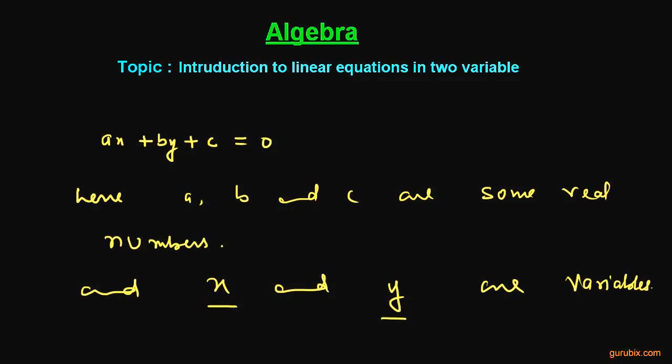And now you can look at the power of this x and power of this y. The power of both x and y is 1. Therefore, this equation is a linear equation in two variables. And most importantly,